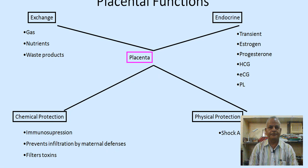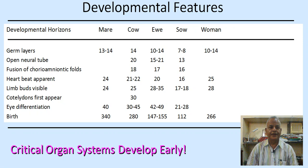The placenta acts as a place for exchange of gases, nutrients, and waste products. It helps in chemical protection by immunosuppression, prevents infiltration by maternal defenses, and filters toxins. It provides physical protection as a shock absorber and acts as a transient endocrine gland producing estrogen, progesterone, hCG, ECG, and prolactin, or placental lactogens.